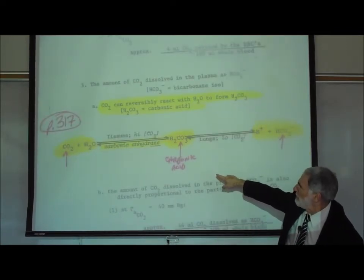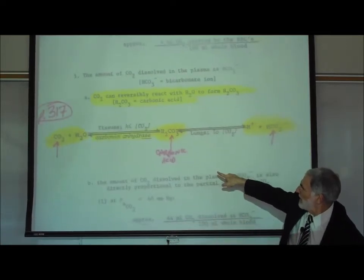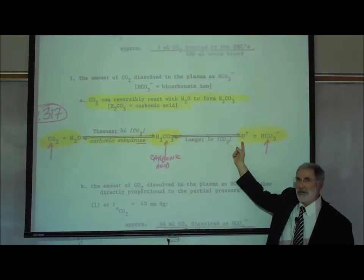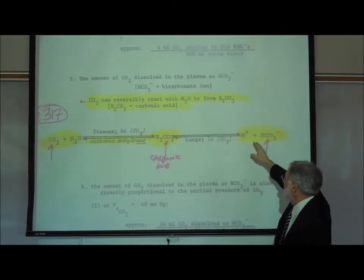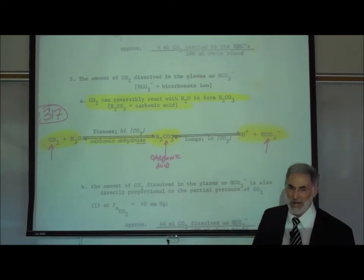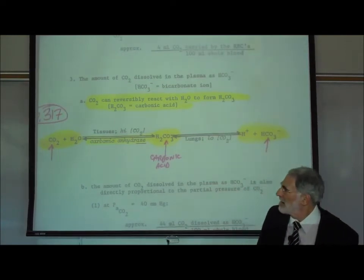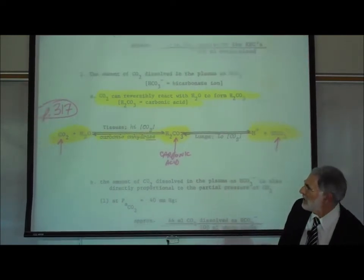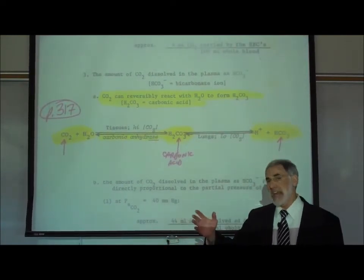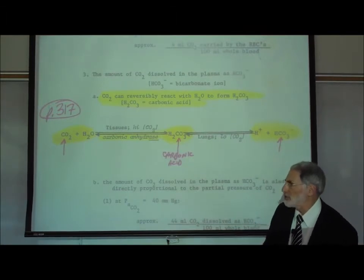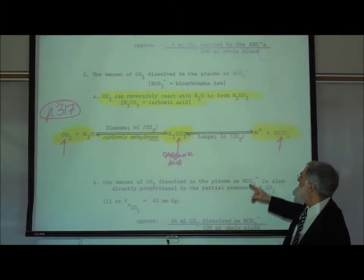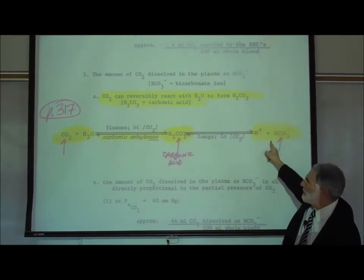Then most of that carbonic acid proceeds to dissociate or ionize into a free hydrogen ion and a bicarbonate ion. We therefore say that most of the carbon dioxide carried in the bloodstream is in the form of bicarbonate.